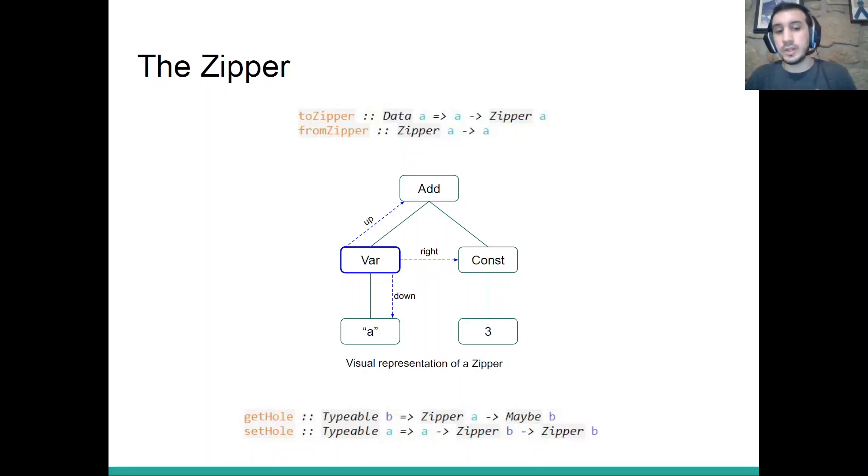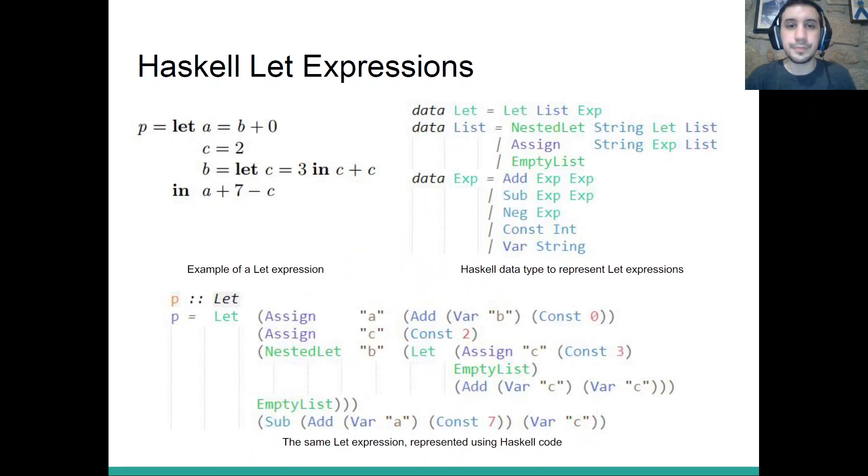Finally, we can navigate all we want. We want to change the data. We can use getHole to get the data the zipper is pointing towards, and we can use setHole to change that data. This zipper data structure is extremely powerful for navigating data structures, and we are going to use this in our embedding.